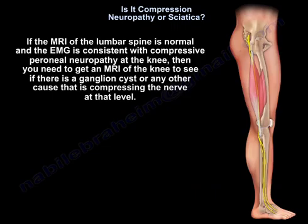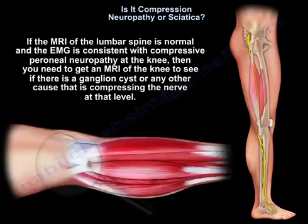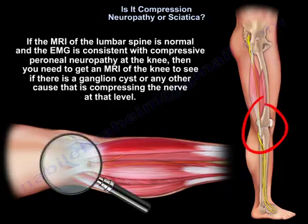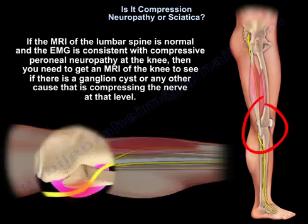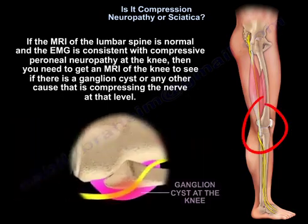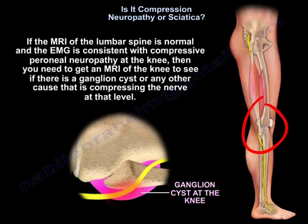If the MRI of the lumbar spine is normal and the EMG is consistent with compressive perineal neuropathy at the knee, then you need to get an MRI of the knee to see if there is a ganglion cyst or any other cause compressing the nerve at that level.